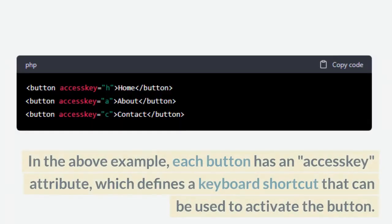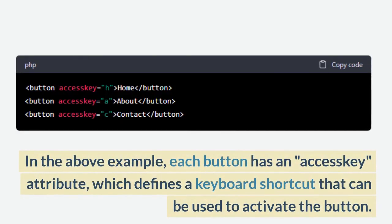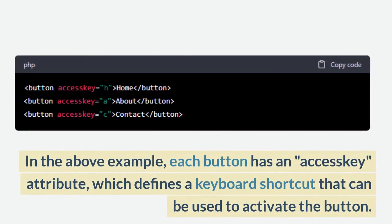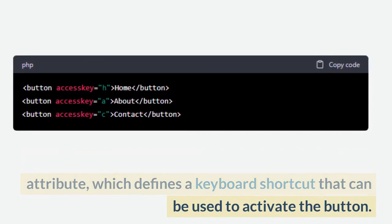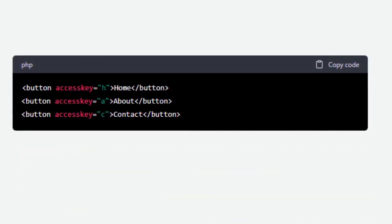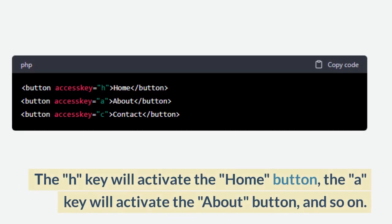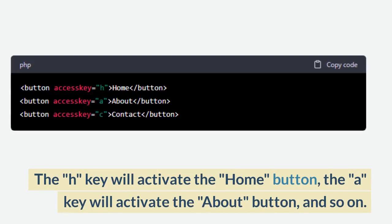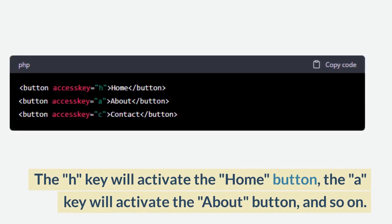In the above example, each button has an access key attribute, which defines a keyboard shortcut that can be used to activate the button. The H key will activate the home button, and the A key will activate the about button.